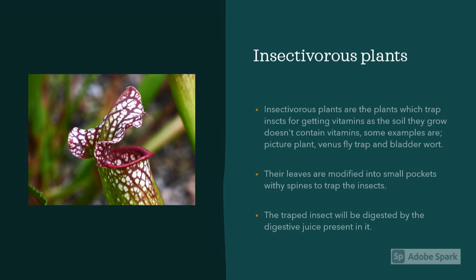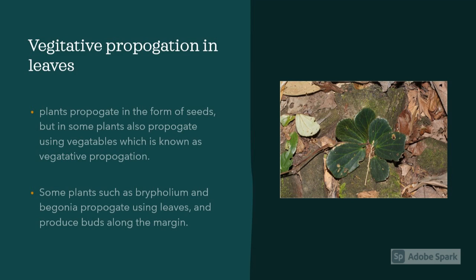Now let's talk about one of the most interesting topics: insectivorous plants. These leaves are modified into small pockets and bladders to trap insects and to digest them to get the vitamins from them. This is done because the soil they grow in lacks vitamins. We all know that plants reproduce through seeds and vegetables, but plants also reproduce through leaves, such as in Bryophyllum, where there are small buds along the leaf margin, and when those buds fall off the leaf, they reproduce.